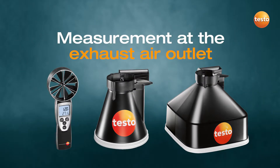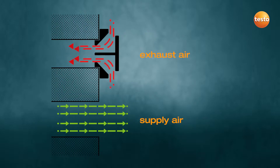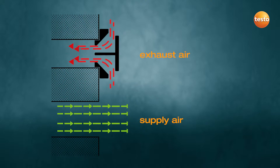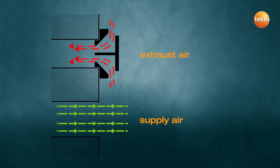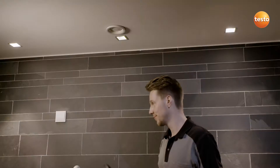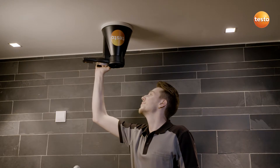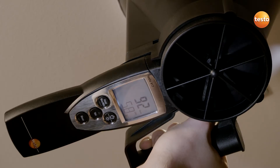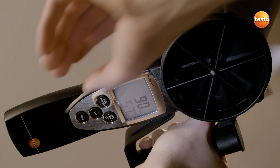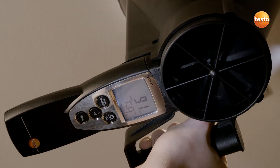This is how you measure properly at the exhaust air outlet. A funnel is required to measure the exhaust air. The reason: there is no directed flow profile available for exhaust air, as the air is sucked in funnel-like from the room. This means there is no definable area in the room via which the volume flow can be determined. This challenge is easily solved with the Testo 417 funnel, because it creates defined flow conditions at some distance from the plate outlet in a fixed cross section.